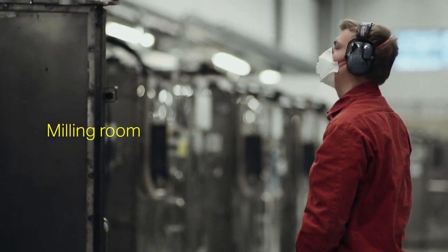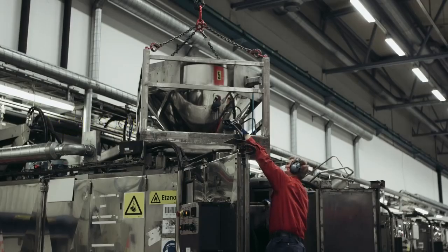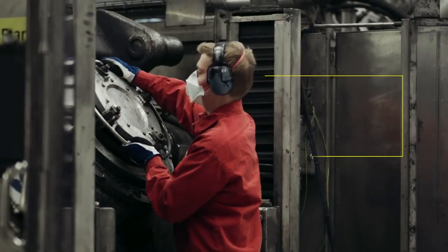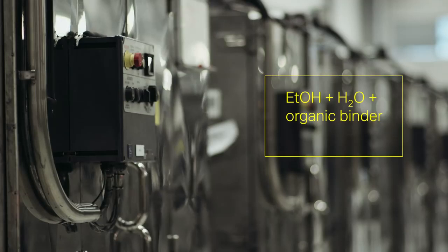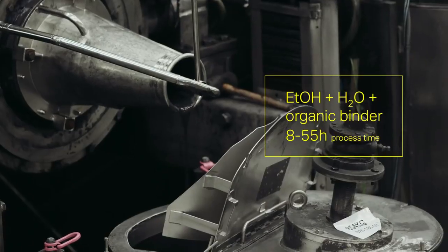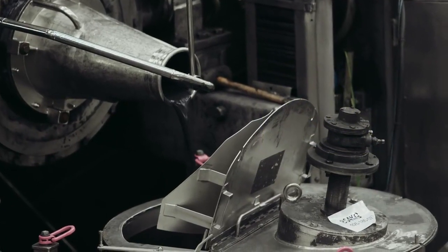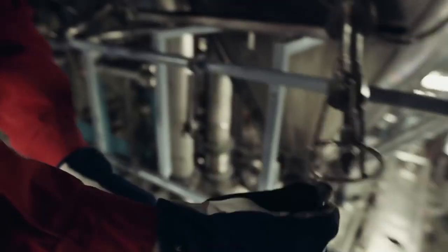In the milling room, the ingredients are milled to the required particle size together with ethanol, water, and an organic binder. This process takes from 8 to 55 hours depending on the recipe.